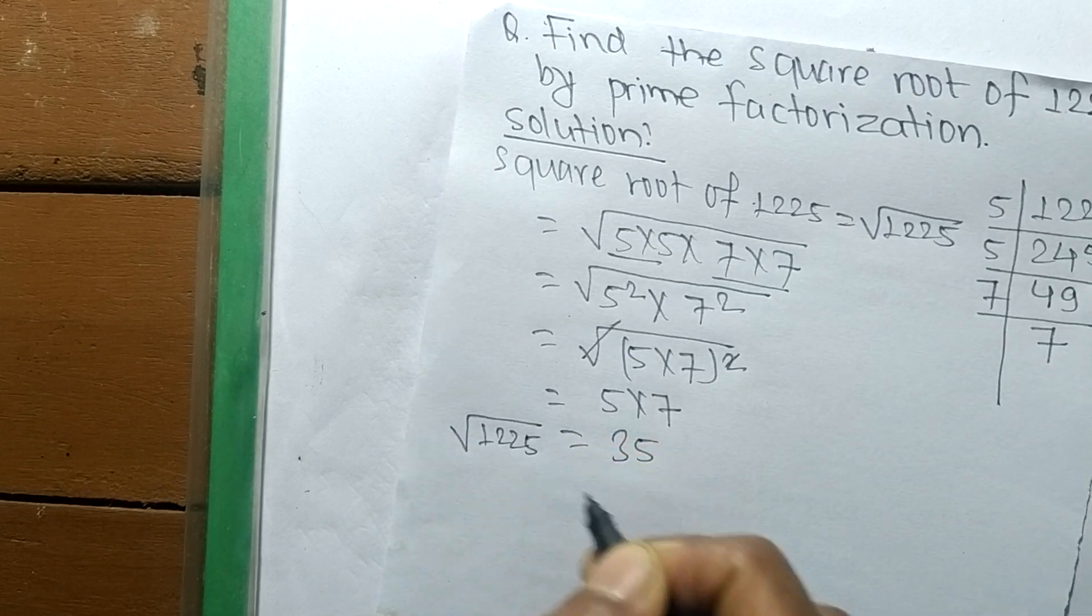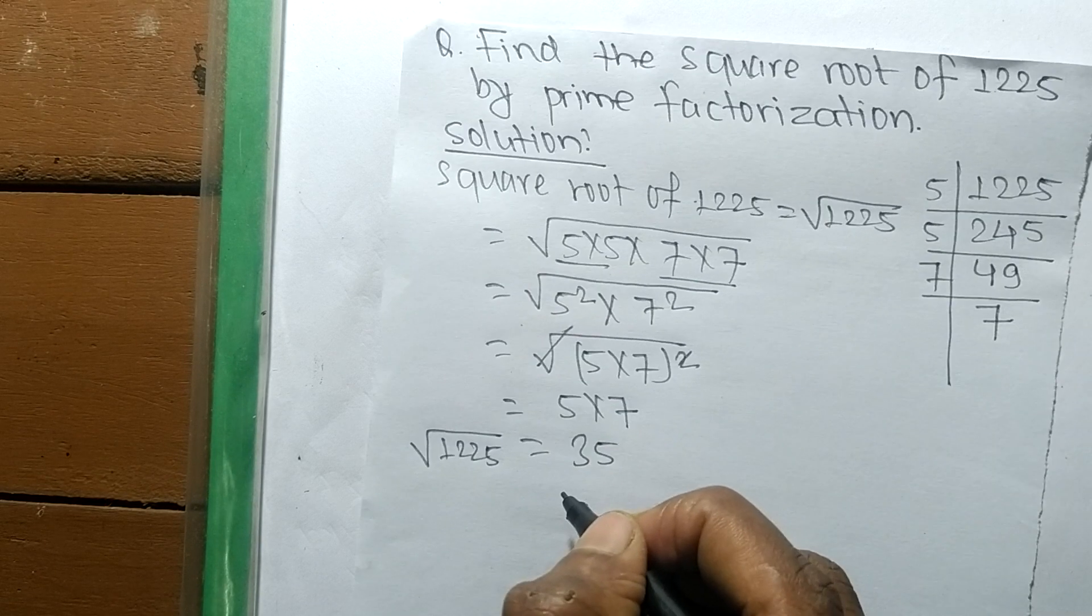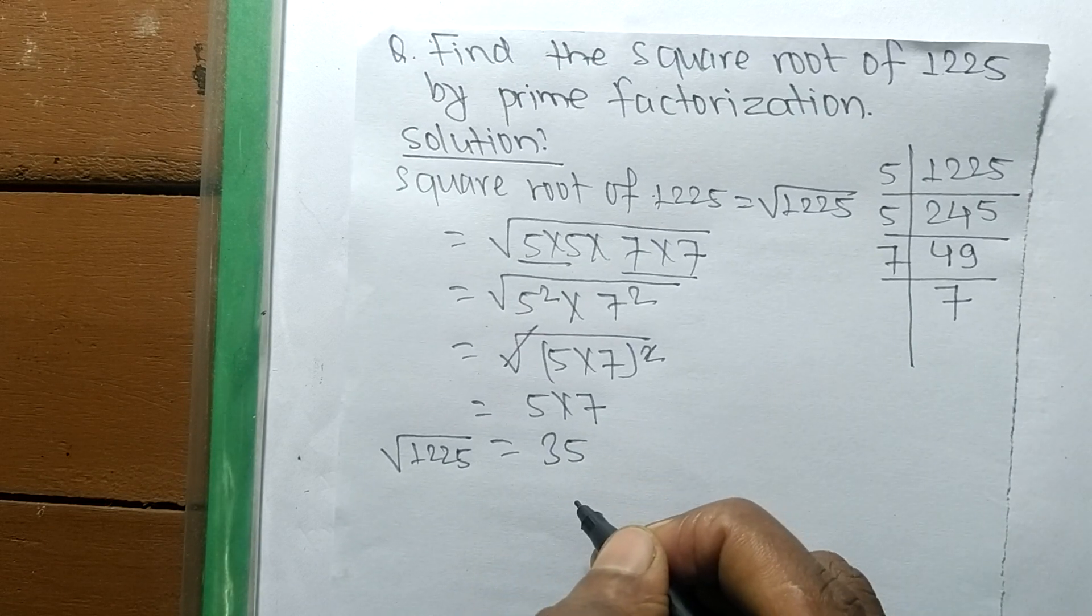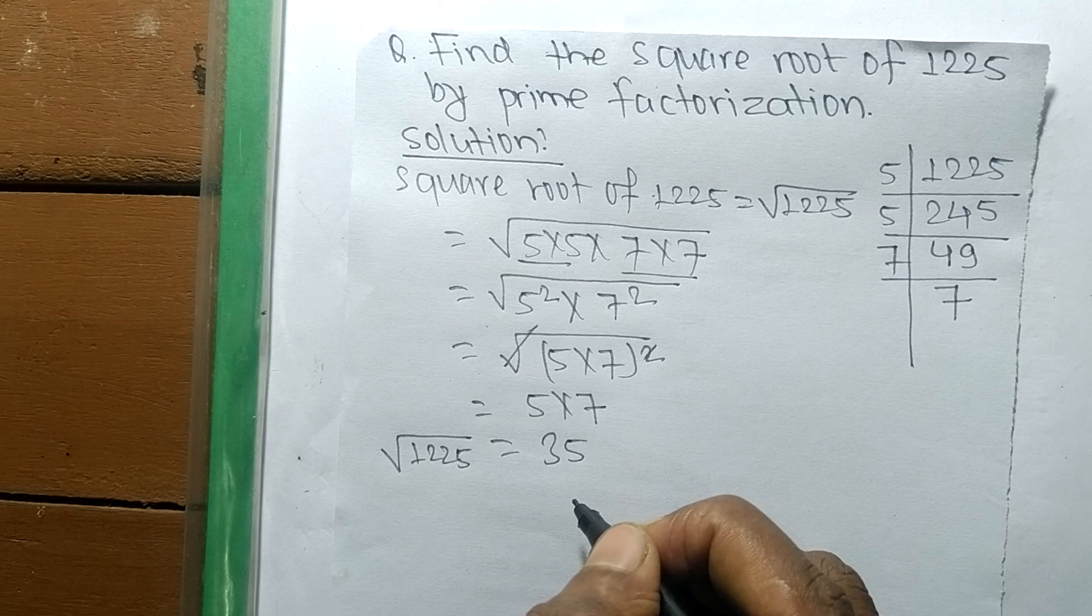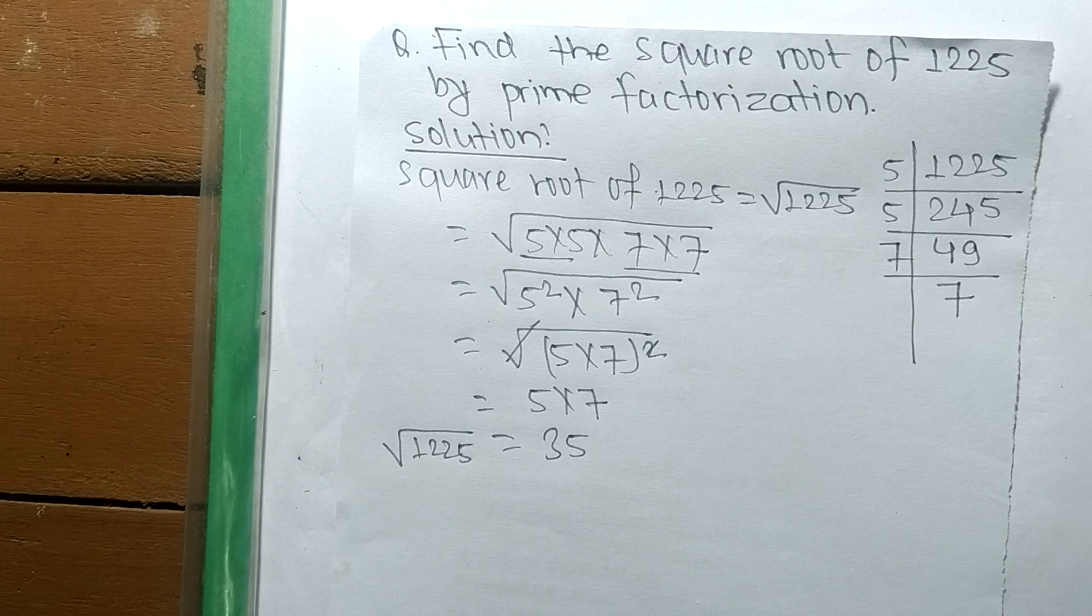Which is equal to 35. So the square root of 1225 is equal to 35. So this much for today. If you have any question related to math and science, then just comment your question in the comment below and we shall provide a video solution of your question. Thank you.